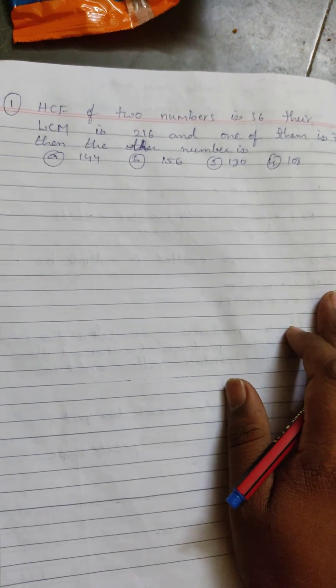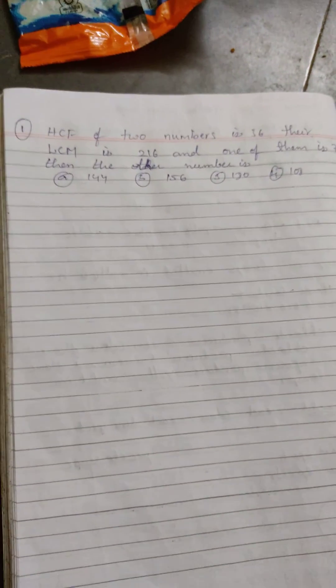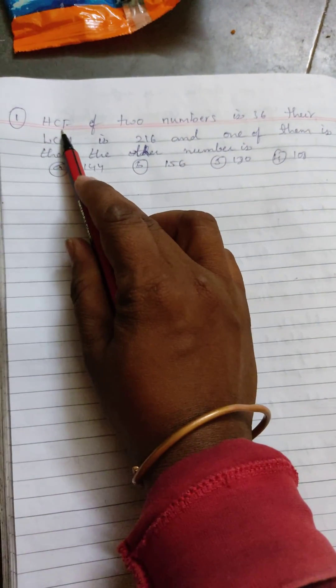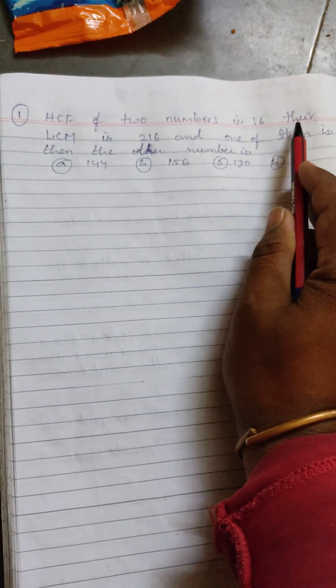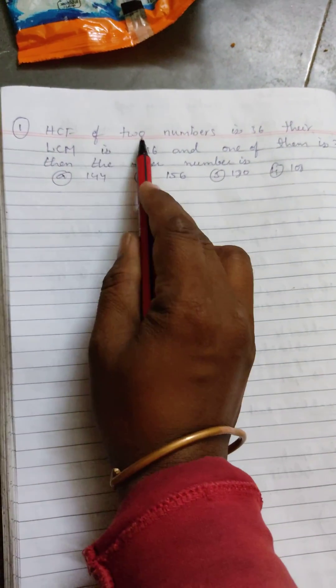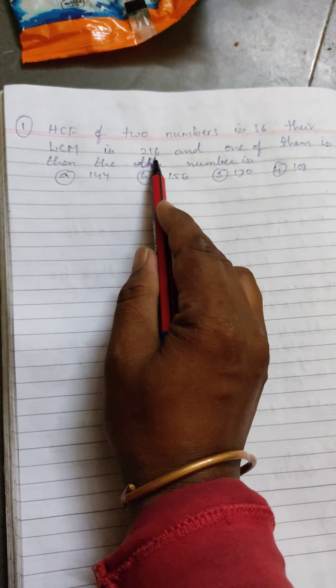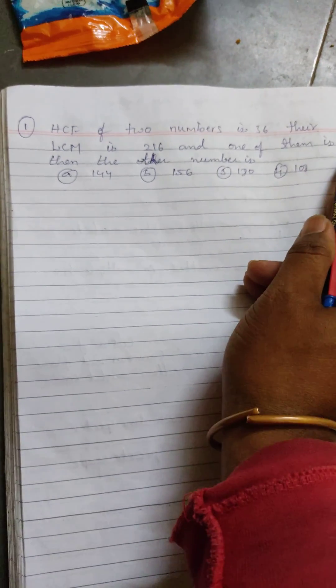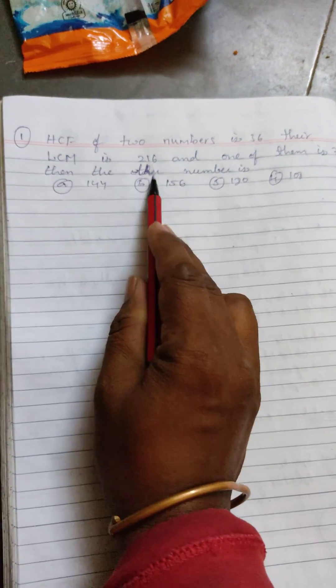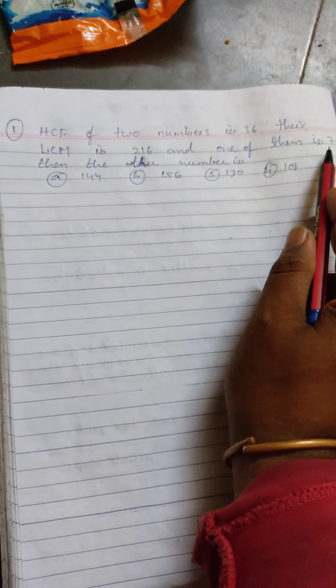Hi, hello, okay. Today we are going to discuss about HCF LCM problem. HCF of two numbers is 36, their LCM is 216, and one of them is 72. Then the other number is, they say two numbers, and one of them they give 72, then find the other number.